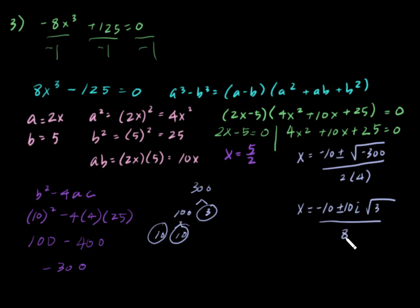Negative 10, 10 and 8 are all divisible by 2. So, x equals negative 5 plus or minus 5i square root of 3 over 4, and 5 halves. Don't forget the 5 halves. 3 roots. And we're done, guys. Good job.